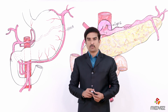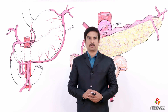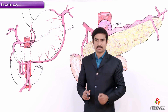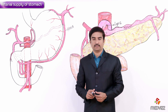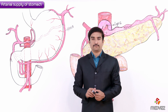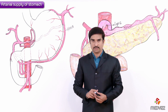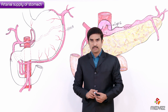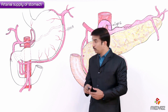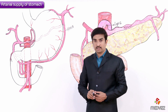Here we are going to discuss one of the very important topics of the gross anatomy of the abdomen — the arterial supply of the stomach. This topic is very important for the majority of licensing exams all over the world. We are going to discuss it under the following headings.